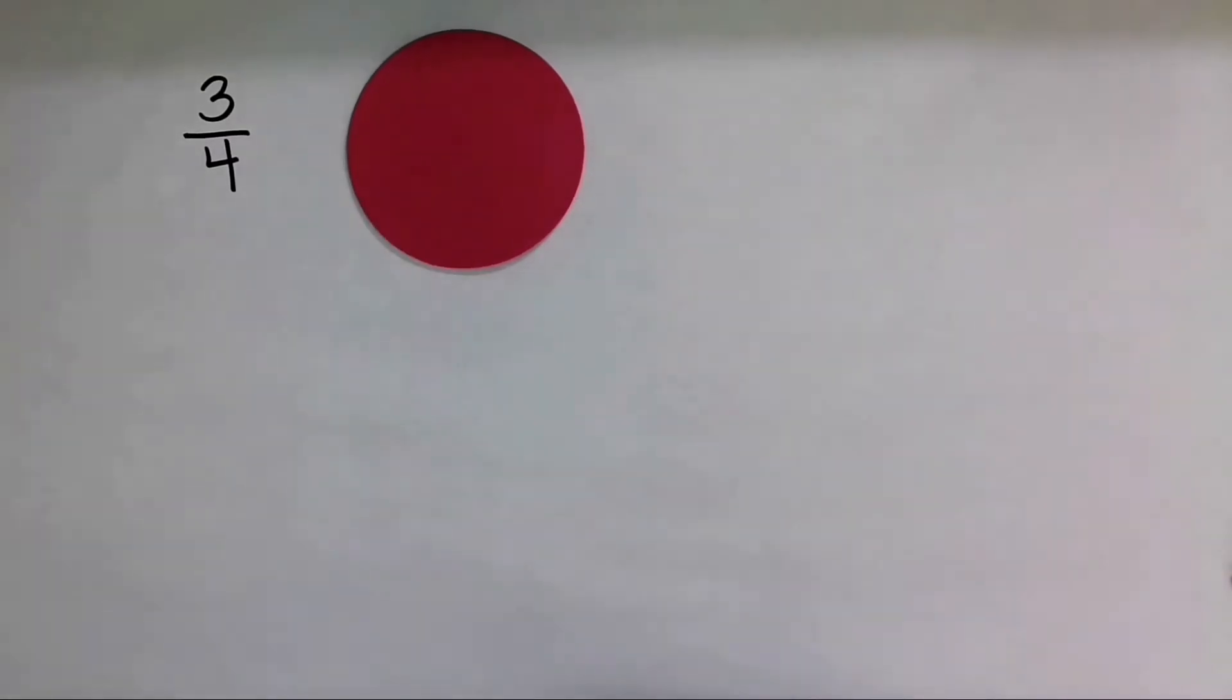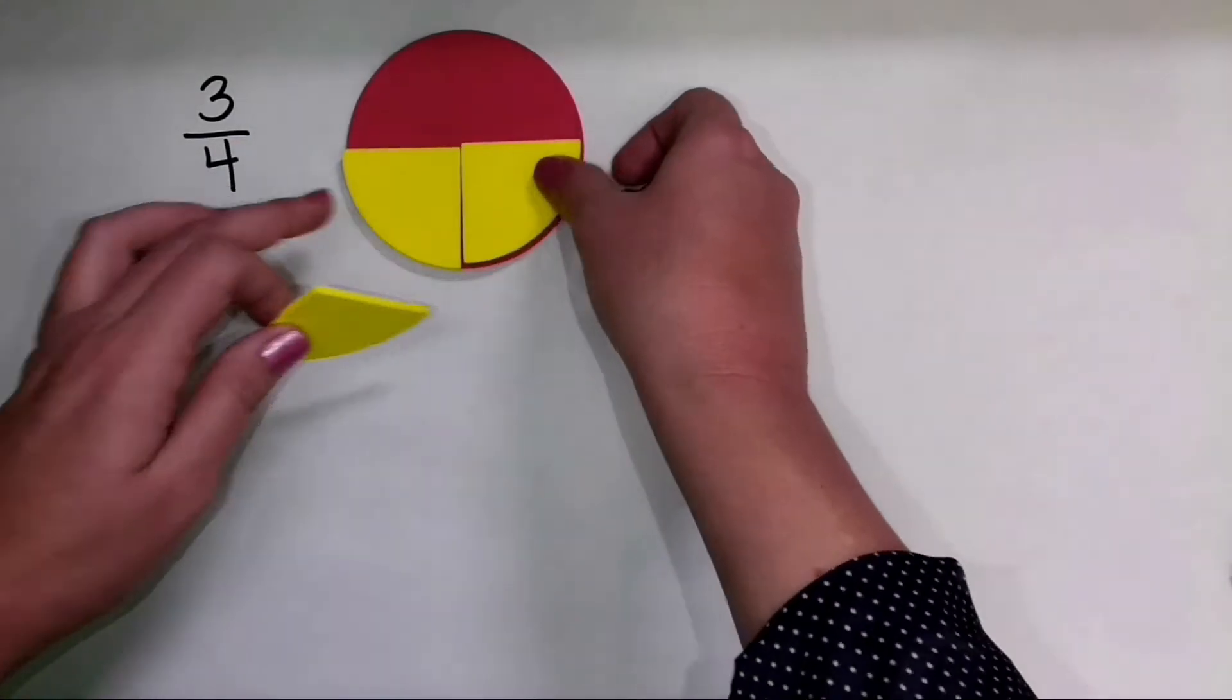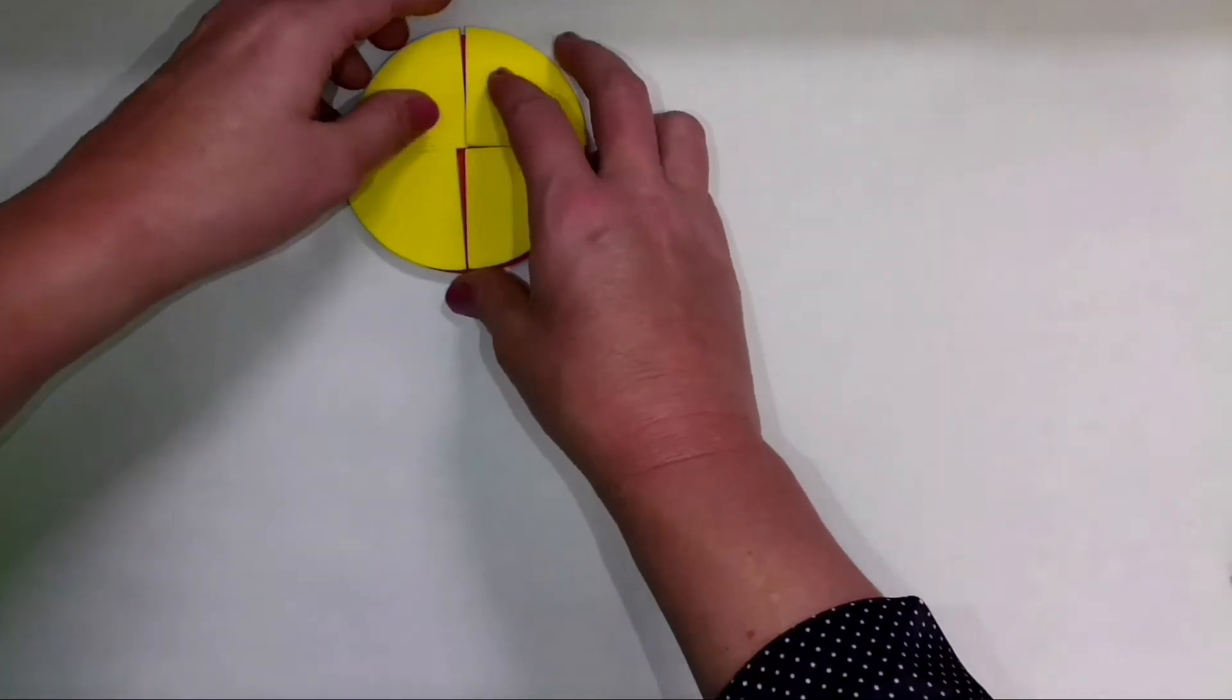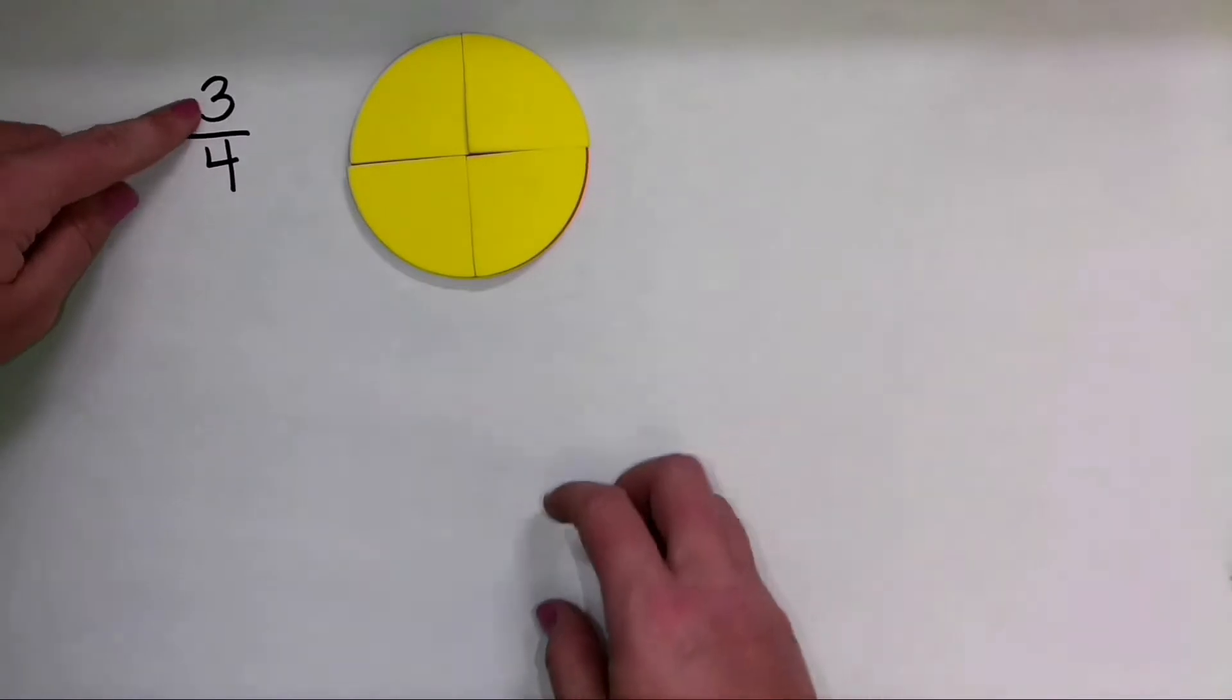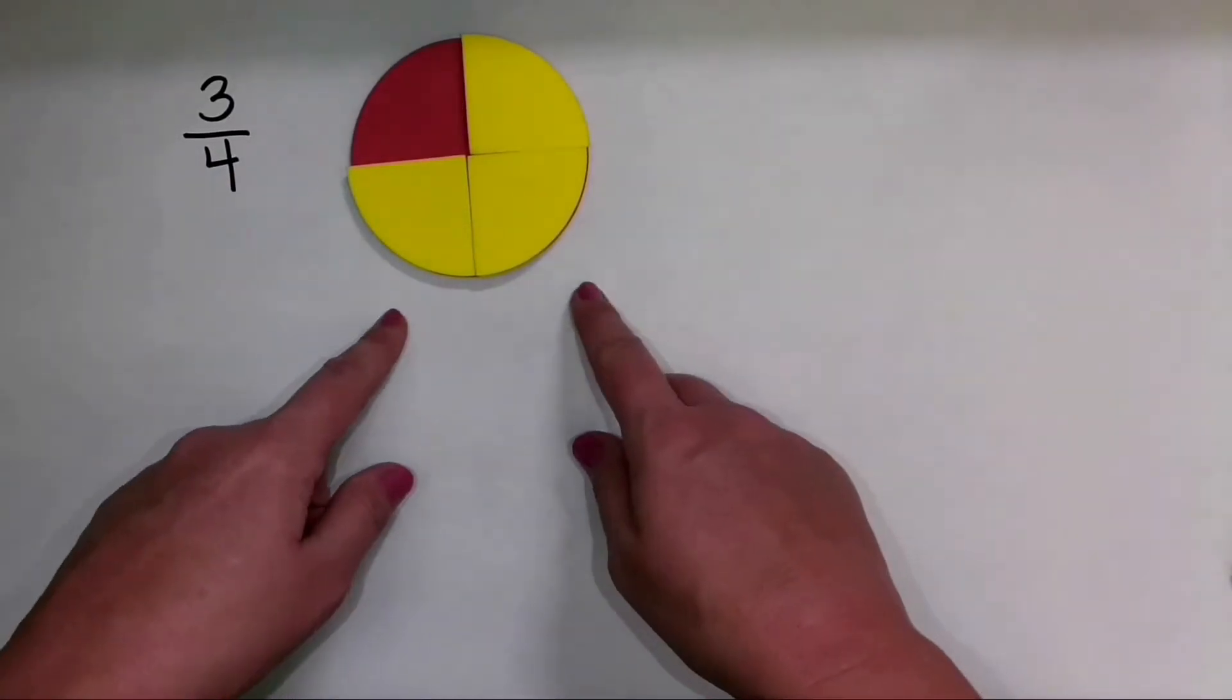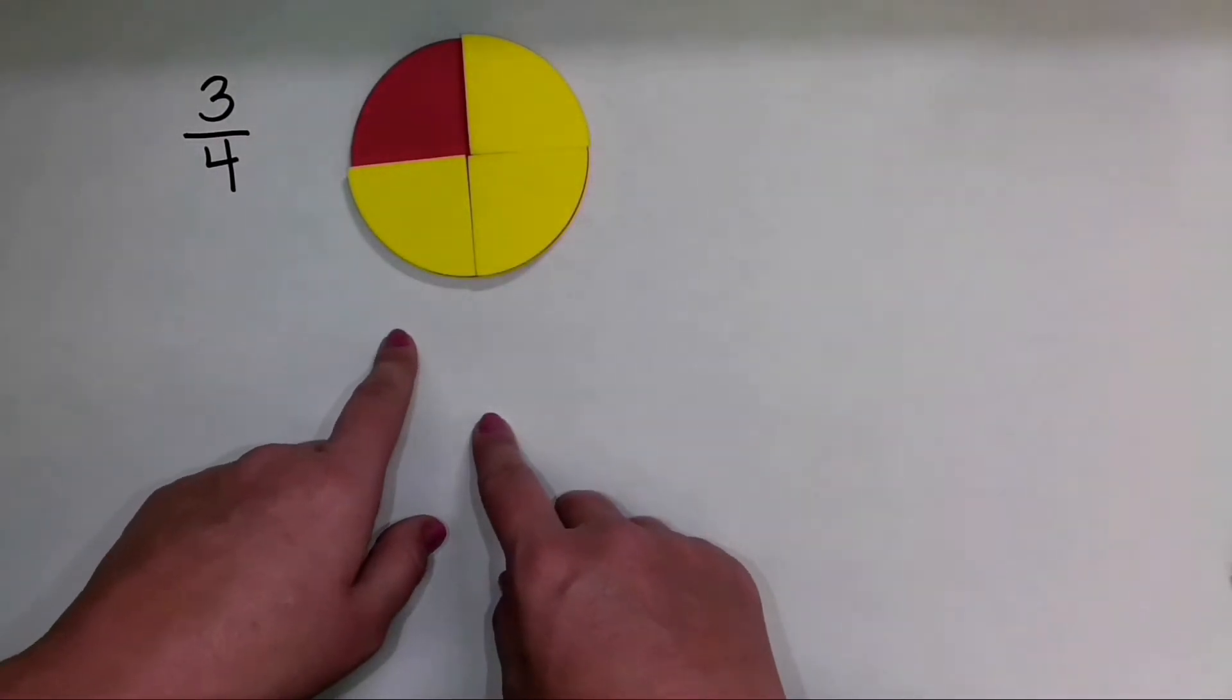Now, with the area model of fractions, often we think about a circular area. And I can take that circular area, and I can divide that area into four equal parts. That's what my denominator is telling me. But then the fraction is 3 fourths. So I need to show three of those four equal parts. So here is an area with one, two, three of the parts shown.